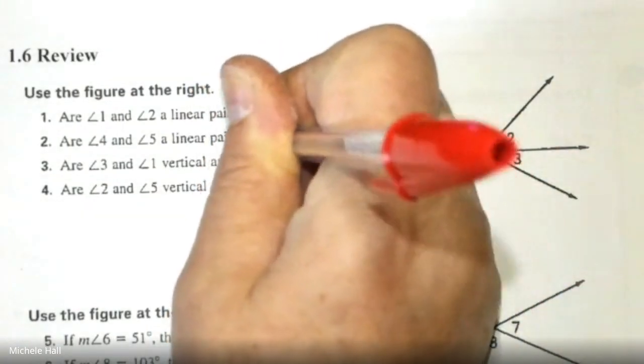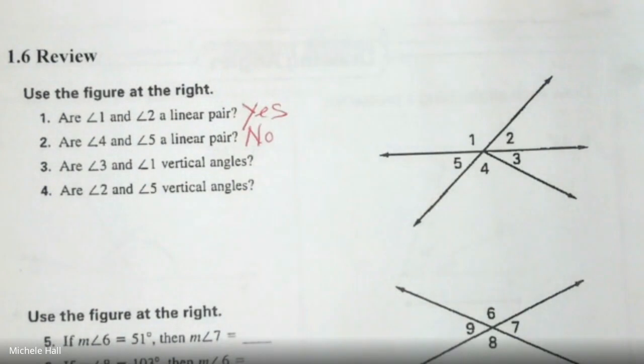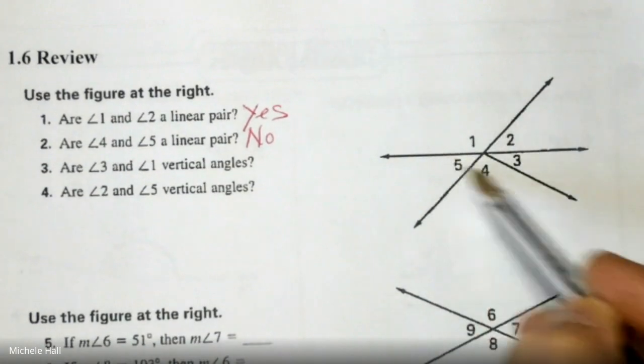What would make up a line with Angle 4 and 5? Angle 5 plus Angle 4 plus Angle 3. If I had all three of these angles, then it would be a straight line.